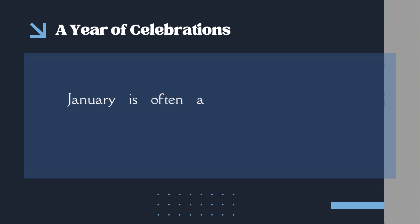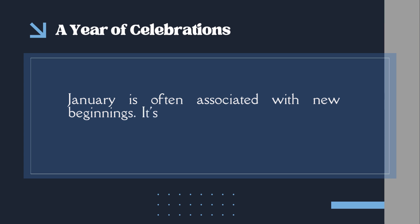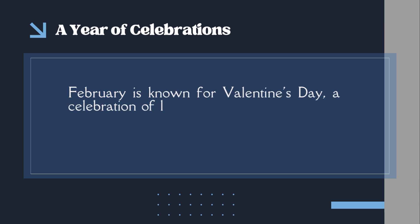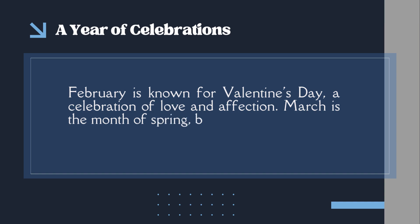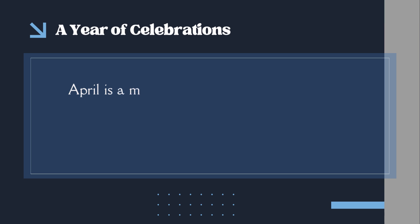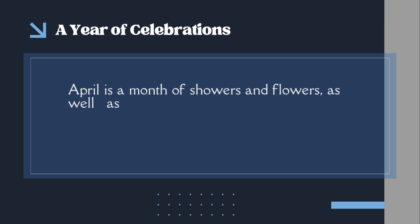January is often associated with new beginnings. It's a time for setting resolutions and making fresh starts. February is known for Valentine's Day, a celebration of love and affection. March is the month of spring, bringing with it warmer weather and blooming flowers. April is a month of showers and flowers, as well as Easter celebrations.